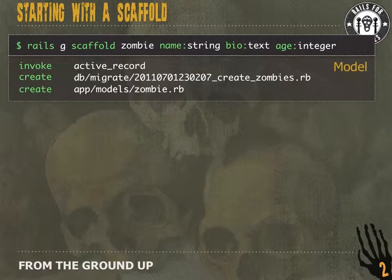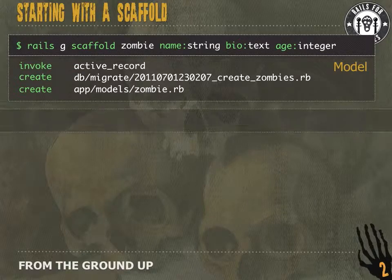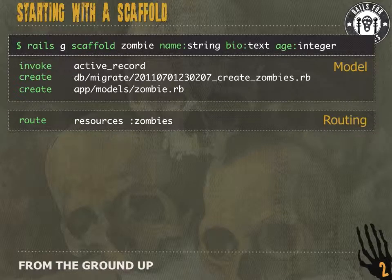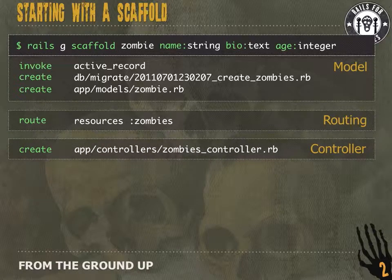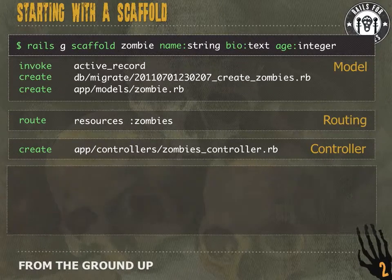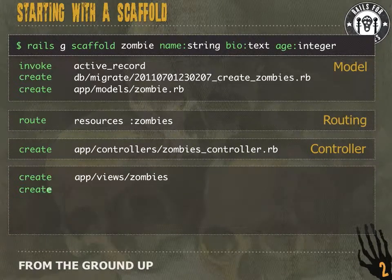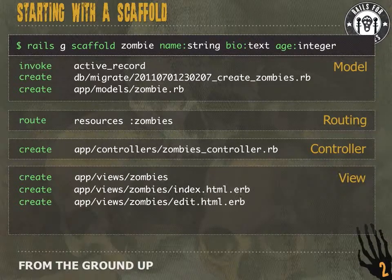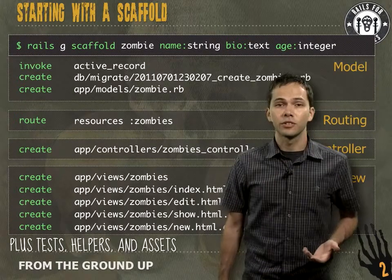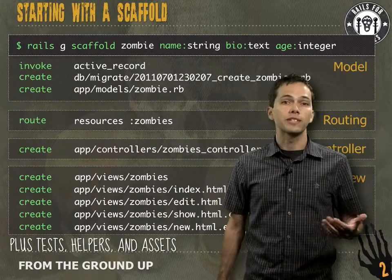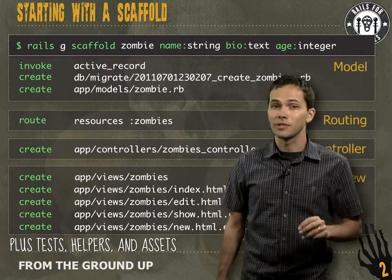You can see it's generating a migration for us, the zombie model, and it's going to add `resources :zombies` to our routes.rb. It's going to create our zombies controller, as well as our views — which should look familiar from Rails for Zombies 1 — including our index, edit, show, and new views. There are a couple of other files it's going to create, like helpers, tests, and assets, and we'll see some of those later.